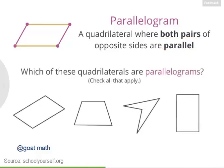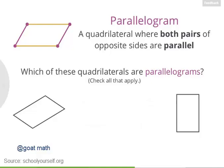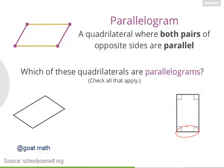Which of these other quadrilaterals down here are also parallelograms? These were the two parallelograms. This one over here also happens to be a rectangle because all its angles are right angles, but it's also a parallelogram because these two sides are parallel, and these two sides are also parallel.